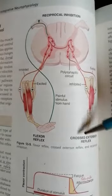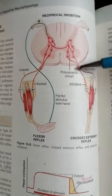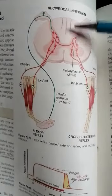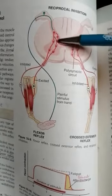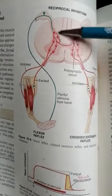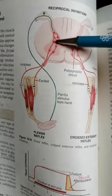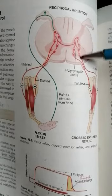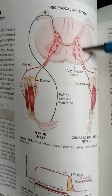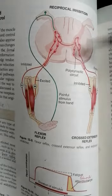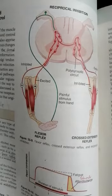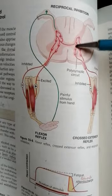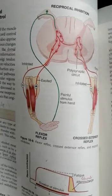The other reflex is the cross extensor reflex, occurring on the opposite side of the same spinal cord segment. Here you can see that in the opposite side of the spinal cord, the signal is coming from the divergent circuit of the flexor reflex. When the impulse passes and crosses the central canal, there is a reverberating circuit present in the anterior gray horn of the spinal cord on the opposite side.